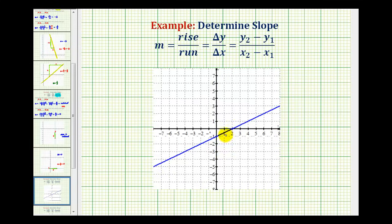We want to determine the slope of the line graphed here in blue. There's a couple of ways of doing this. The first thing to remember is the slope is the ratio of the vertical change with respect to the horizontal change, which can be expressed as the rise over the run or the change in y with respect to the change of x.